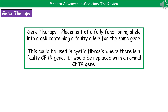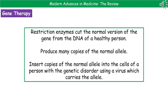The third advance in medicine is gene therapy, where we put a fully functioning allele into a cell that has a faulty one. For example, we can use this to treat cystic fibrosis, which is caused by a faulty allele of the CFTR gene, by replacing it with the normal healthy allele. We first use a restriction enzyme to cut the normal version of the gene from the DNA of a healthy person, produce many copies of that normal allele, and then insert them into the cells of a person with the genetic disorder using a virus as the vector to carry the healthy allele into the cells containing the faulty one.